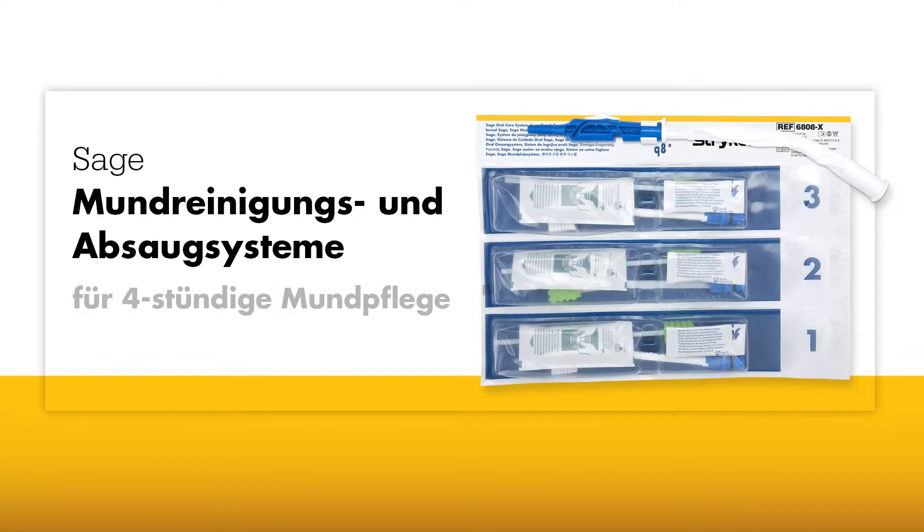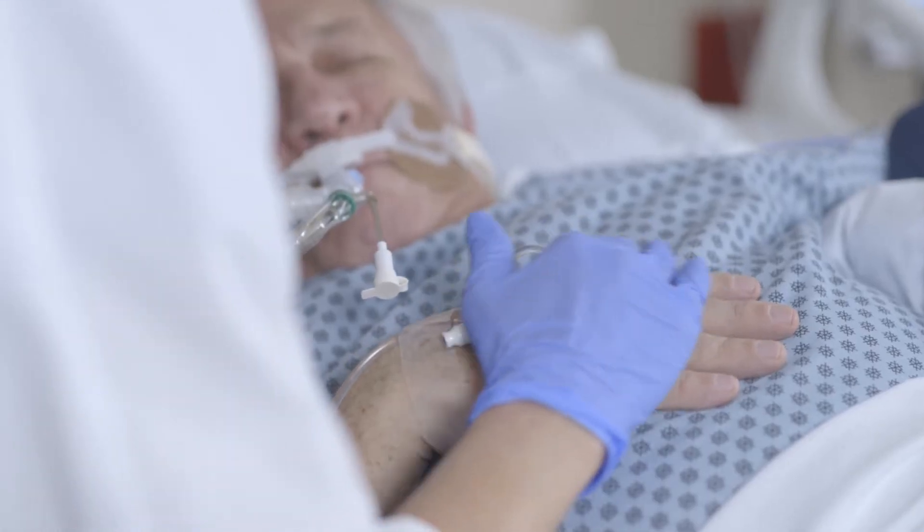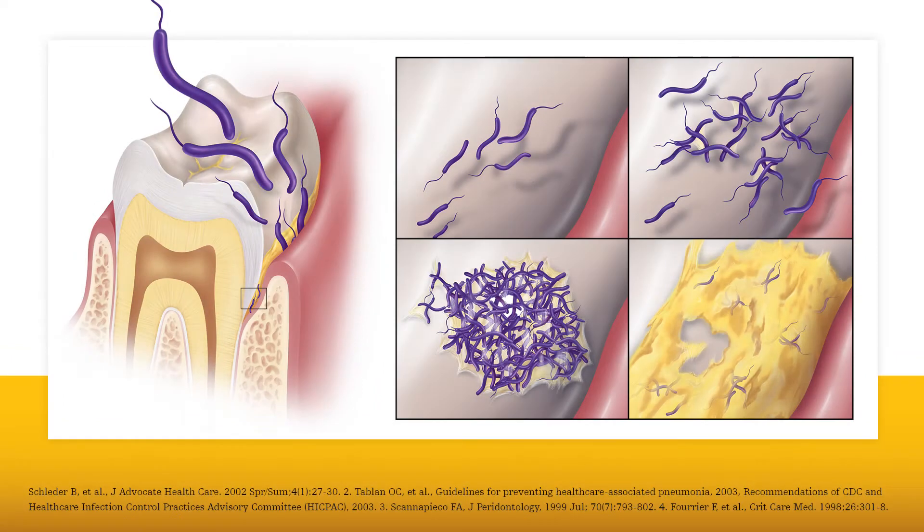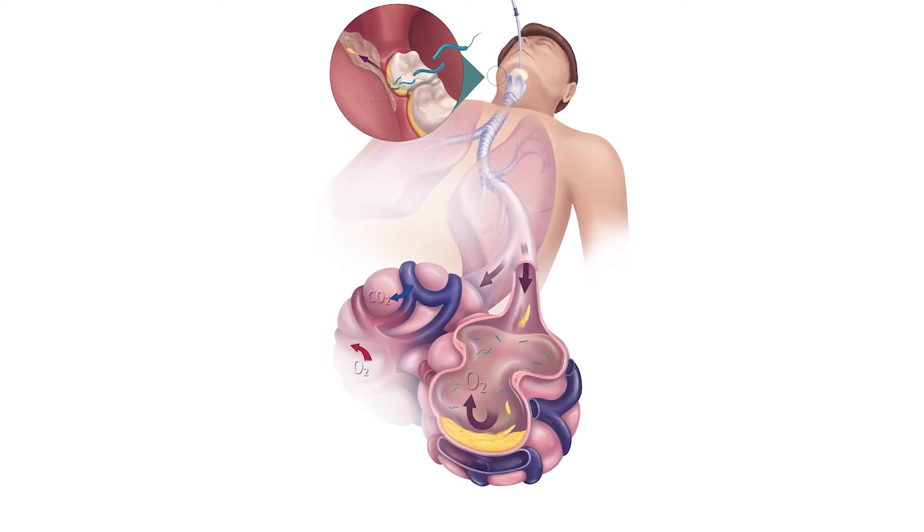Sage oral cleansing and suctioning systems are designed to provide 24 hours of comprehensive oral care for ventilated patients to address risk factors for ventilator-associated pneumonia. Ventilator-associated pneumonia often begins in the oral cavity. Bacteria including dental plaque can colonize in the oropharyngeal area and these pathogens can be aspirated into the lungs causing infection.